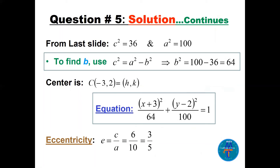Important: in ellipses only, c² = a² − b² (not plus, as in hyperbolas). Plugging in: 36 = 100 − b², so b² = 64. Since the major axis is vertical, a² goes under y. The equation is (x+3)²/64 + (y−2)²/100 = 1. The eccentricity is e = c/a = 6/10 = 3/5.